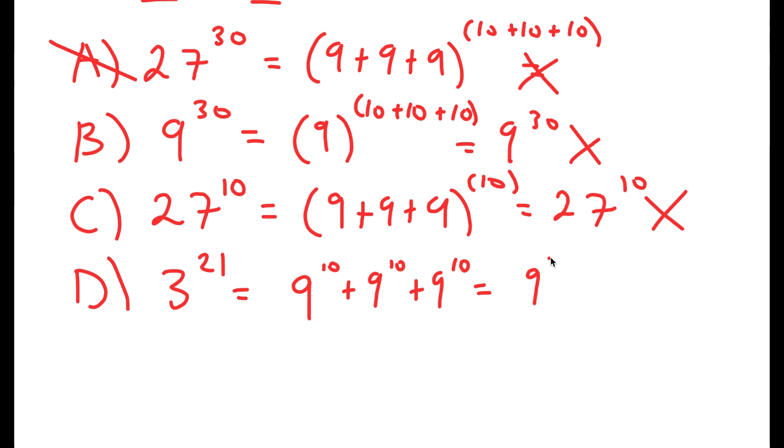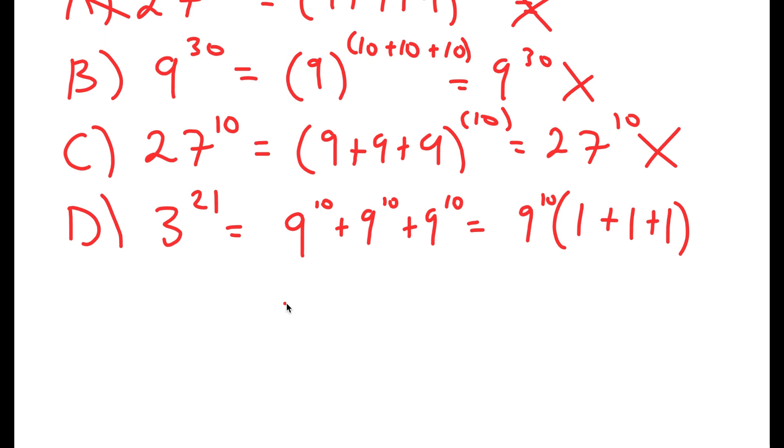And I can factor out 9 to the power of 10. So I get 9 to the power of 10 times 1 plus 1 plus 1, which is equal to 3 times 9 to the power of 10.